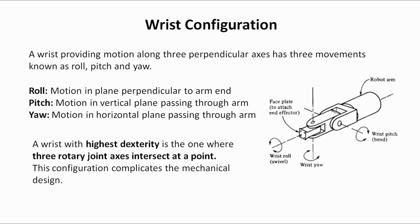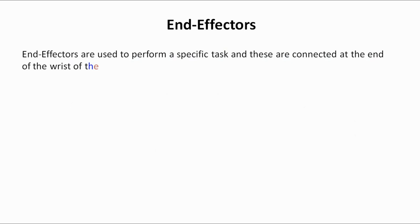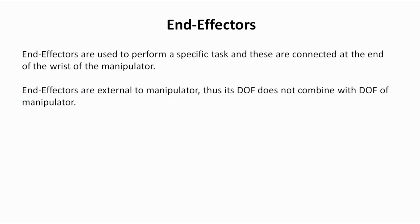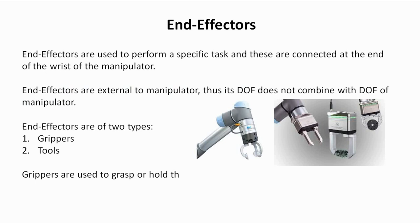The last part in the study of the manipulator is the end effector. End effectors are attached at the end of the wrist and are used to perform a specific task. One important point to note is that end effectors are external to the arm — they do not add to any positioning, orienting, or manipulating. Therefore, the degrees of freedom of the end effector are not combined with the degrees of freedom of the manipulator.